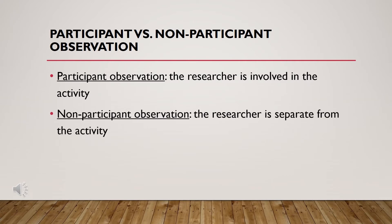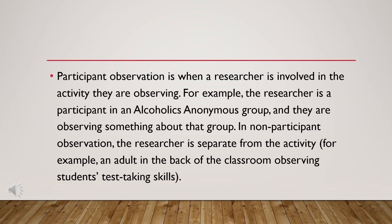Next, we have participant versus non-participant observation. In participant observation, the researcher is involved in the activity — for example, the researcher is a participant in an Alcoholics Anonymous group and observes something about the group. In non-participant observation, the researcher is separate from the activity — for example, an adult in the back of the classroom observing the students' test-taking skills.